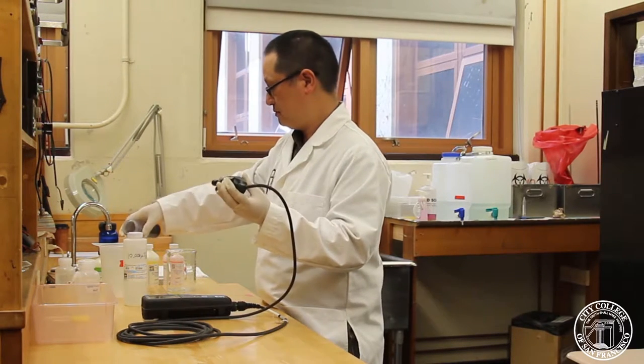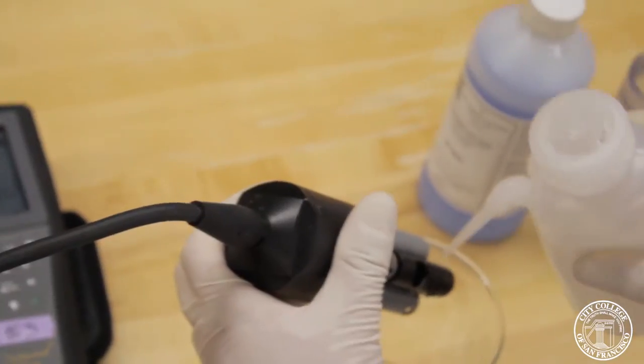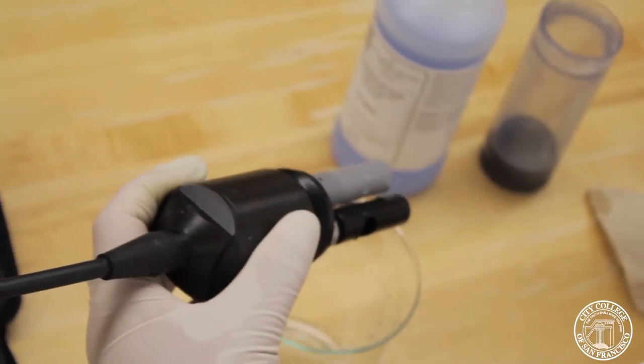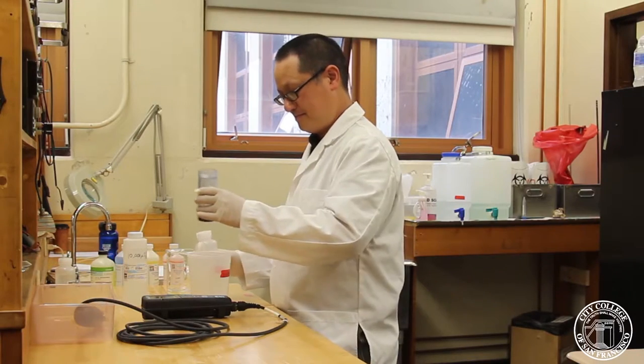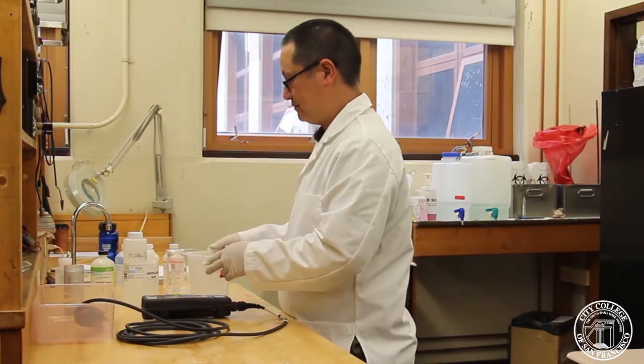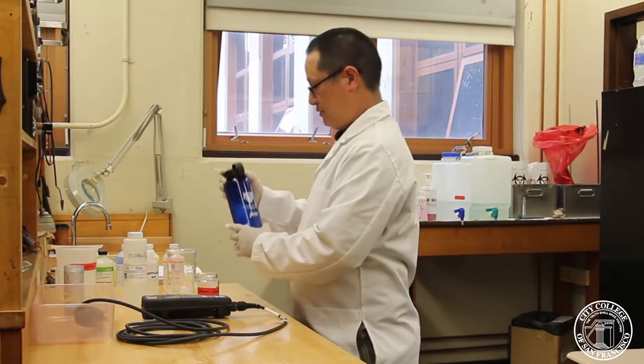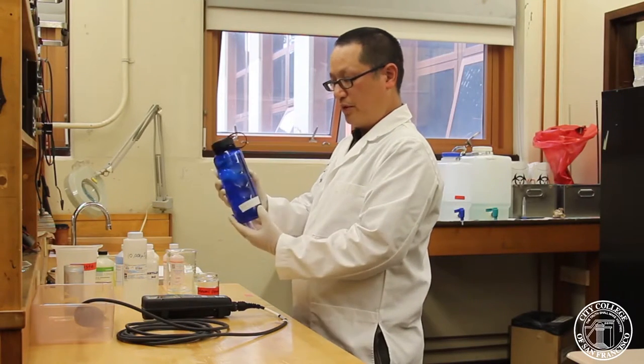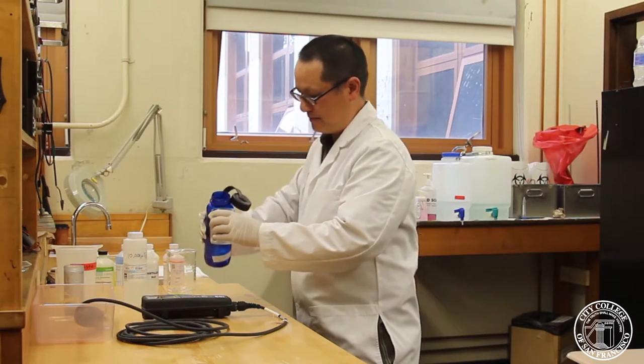First, we're going to pour out the solution and rinse the probe. Then rinse the cup with distilled water. Now, if we want to test an actual sample of water, we take our sample of Hawaiian ocean water. We'll pour it in our sample container.